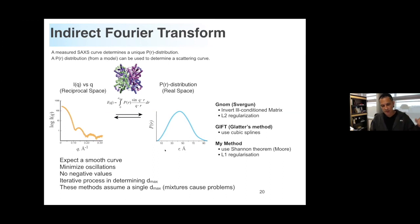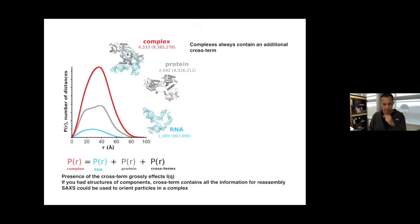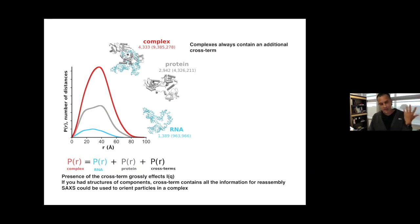The reason I really like looking at things in terms of P(r) distribution is that — for example with an RNA — you have the P(r) for the RNA, P(r) for the protein in gray, and when they form a complex you get a massive new increase in distances representing the cross-terms. This tells us that if we know the structure of the RNA and the protein, we have sufficient information to position the complex because so many cross-terms are defined.